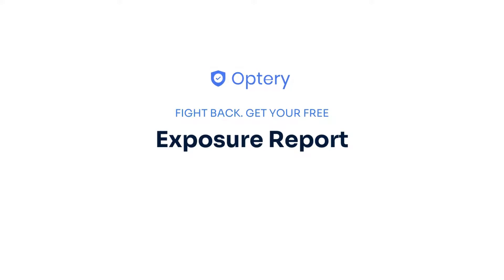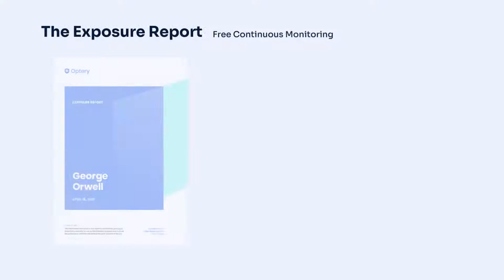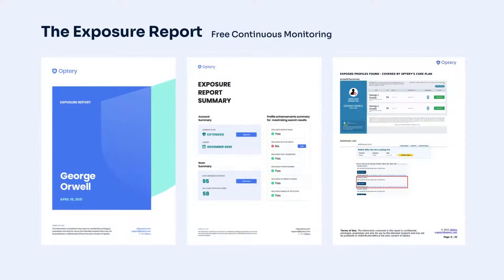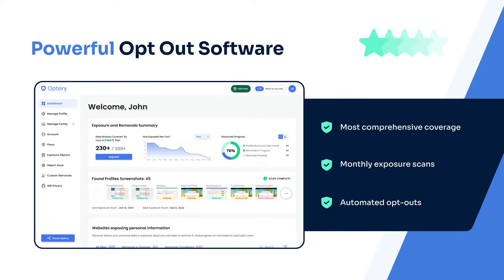That is why Optory offers the free exposure report. The exposure report shows screenshots from sites that have your data with links to let you see that data right on the site. Use the exposure report and our how-to guides to opt yourself out for free, or sign up for an Optory paid plan and Optory will handle the monitoring and removals for you and your family members.